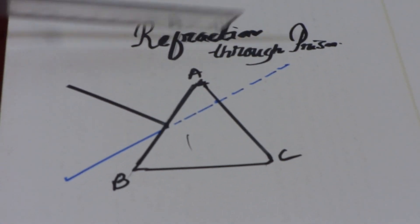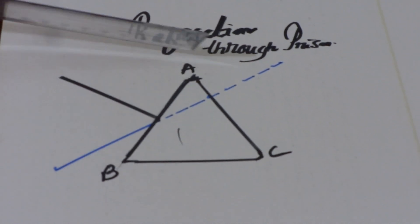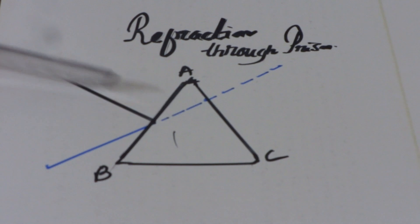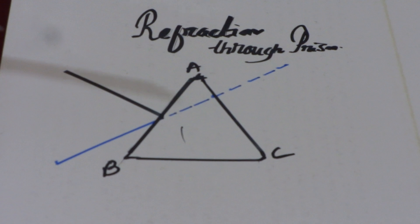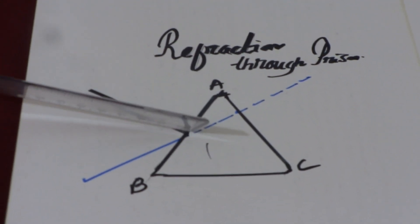Let's talk about refraction through the prism. This ABC is a prism, and if this is the normal to this AB line, when we keep the prism on any paper and trace it out, it appears like a triangle and this is the normal.